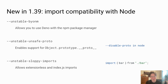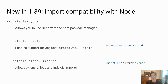The unstable unsafe proto enables the object prototype, which is considered a security problem. In Node, they have it enabled by default but provide a flag to opt out of it. It's the opposite in Dino — we consider this very unsafe, and for security reasons have it disabled by default, but we provide this flag as an escape hatch.